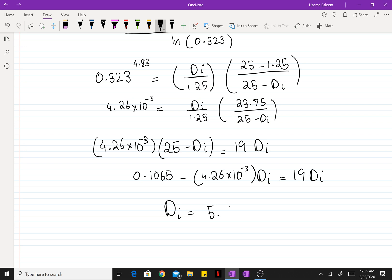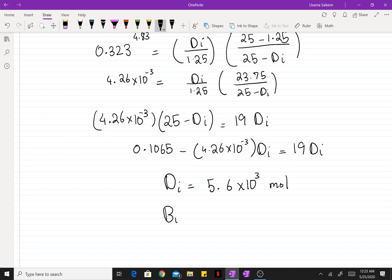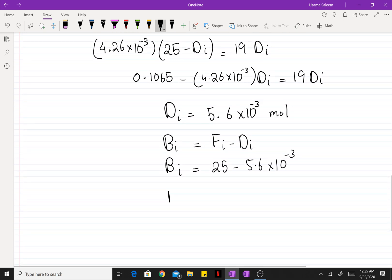So DI comes out to be 5.6 times 10 to the negative 3 moles. Which means that BI, the flow of species I in the bottom, is gonna be the flow in the feed minus DI, which equals 25 minus 5.6 times 10 to the negative 3, which is 24.99 moles.